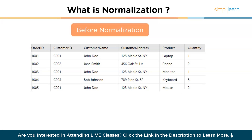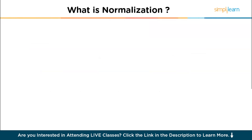In the above table, the customer address for John Doe is repeated three times. If John Doe moves to a new address, every occurrence of his address in the table must be updated. If any instance is missed during the update, it leads to inconsistencies and errors in the database. The solution is reducing the redundancy through normalization.